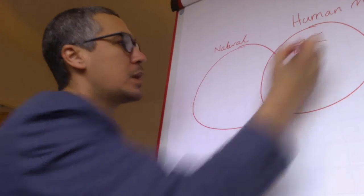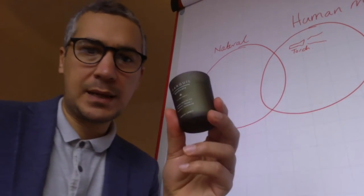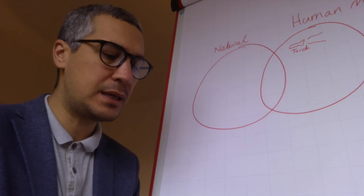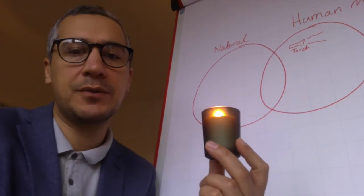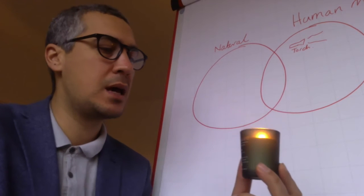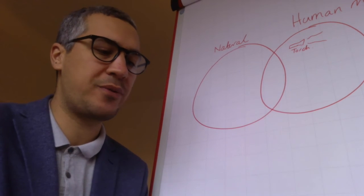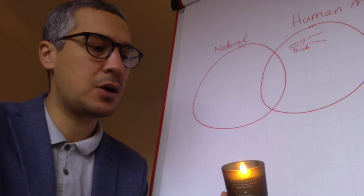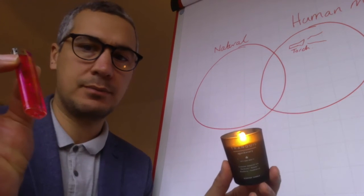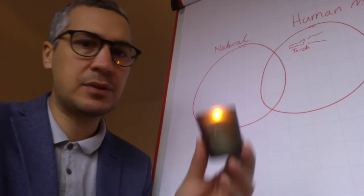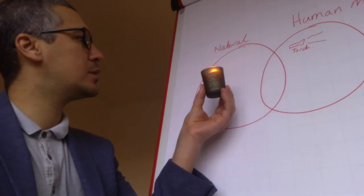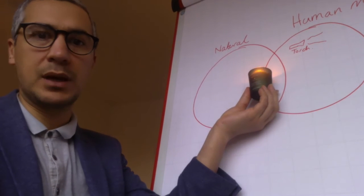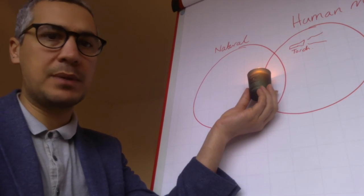Then we've got the second one - a candle. Now this is probably a bit tricky and you'll have to decide for yourself what this one is. It's made of glass, it's filled with wax, it's got a wick in the middle, and then it's got fire which I made using a lighter. You'll have to think about whether this goes into natural or human made, or maybe you think it might even go into both.